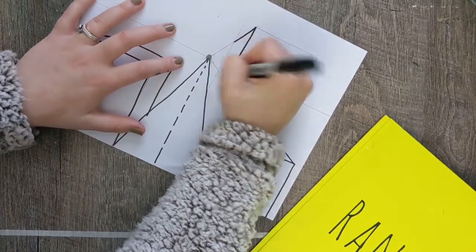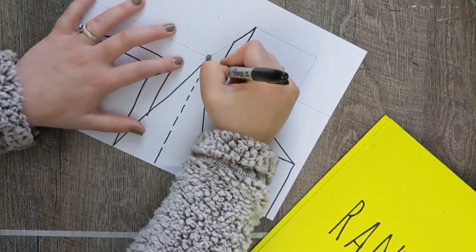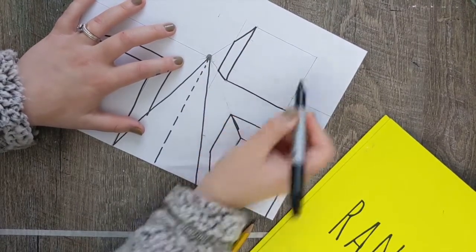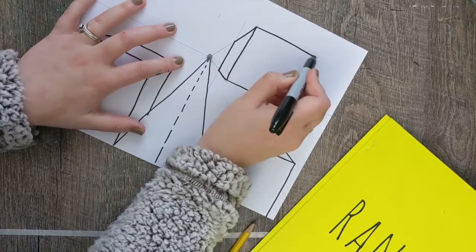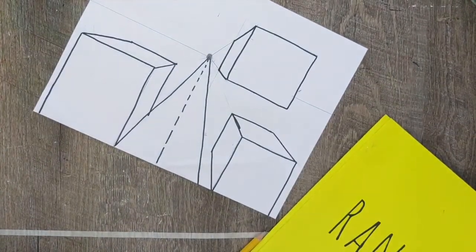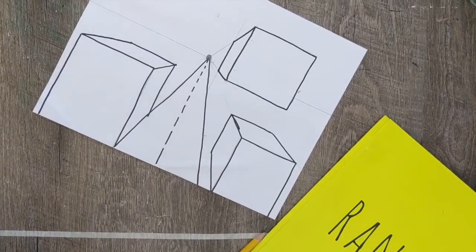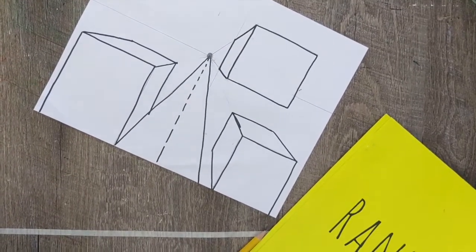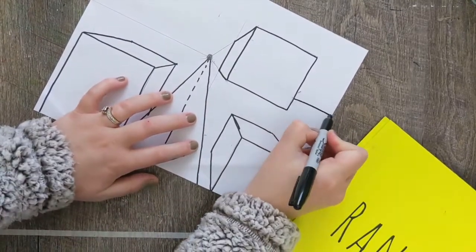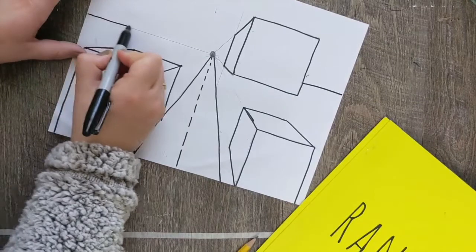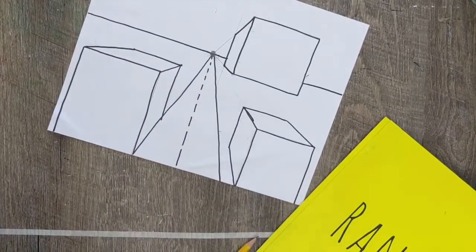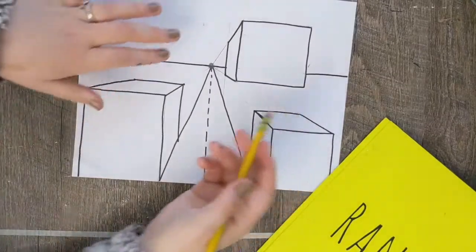I will go over with permanent marker so that you can see it better. And there is our one point perspective. Remember, our few words that we need to learn from this is the vanishing point, that dot in the middle. Our horizon line, where the sky meets the ground. And then parallel, meaning that our lines are not going to intersect or cross over each other.